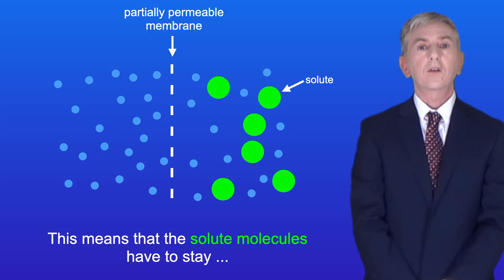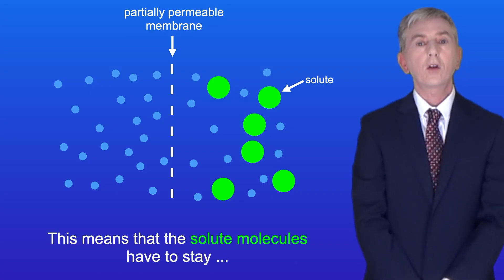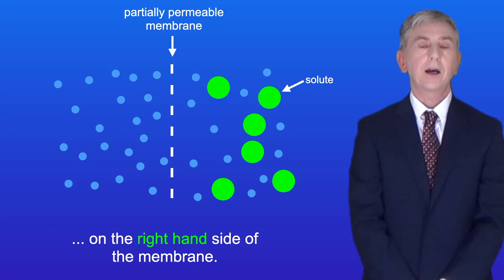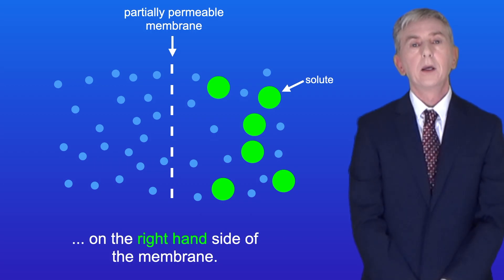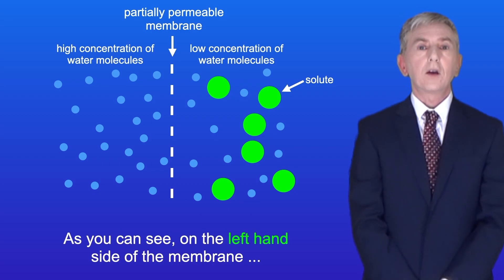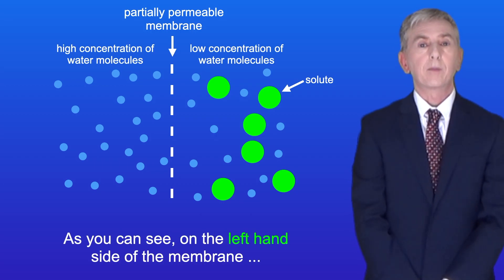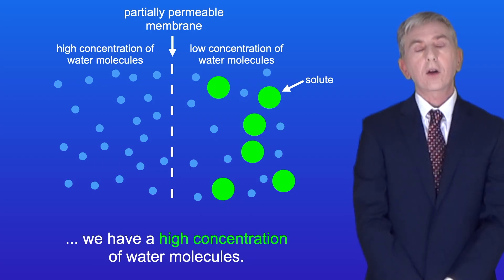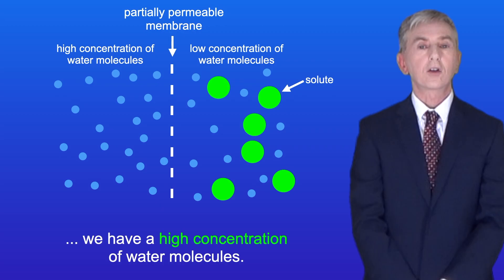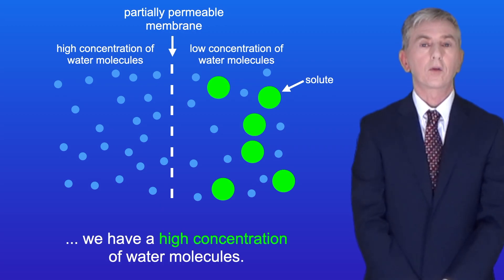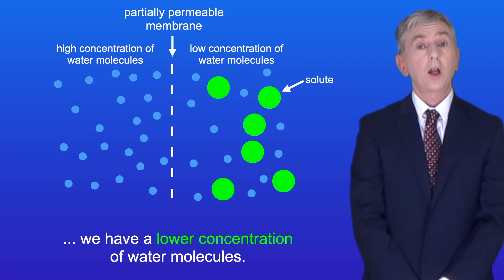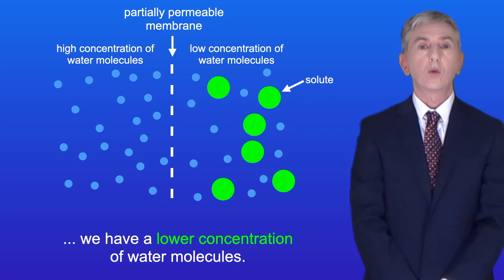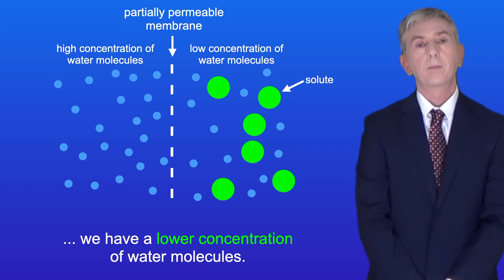This means that the solute molecules have got to stay on the right hand side of the membrane. So as you can see on the left hand side of the membrane, we've got a high concentration of water molecules, and on the right hand side of the membrane we've got a lower concentration of water molecules.